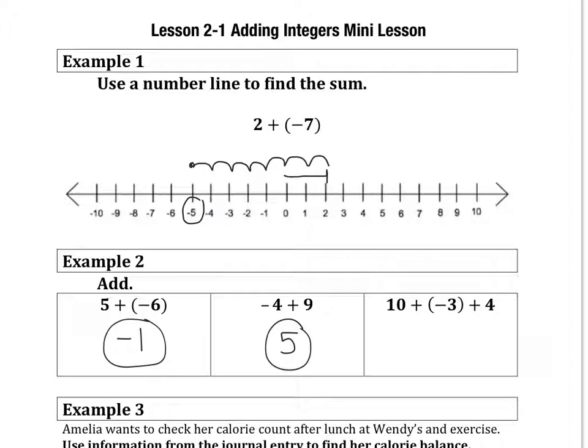And then on the last one here we have 10 plus negative 3 plus positive 4. So you can group the positives together if you'd like to first or go from left to right. It's probably safer to go left to right if you're unsure. 10 plus negative 3, they're opposites, so we subtract and keep the sign of the larger. 7. 7 positive. Plus the 4 still, 7 plus 4, 11.